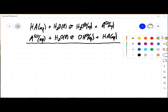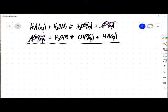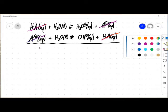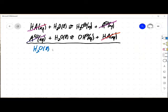Well, A- appears on both sides. HA appears on both sides. So what am I really left with? I'm left with H2O + H2O.